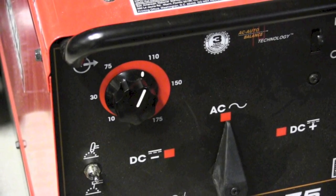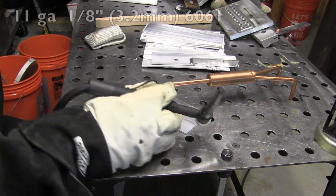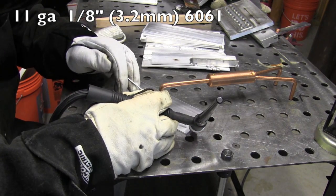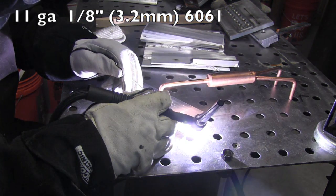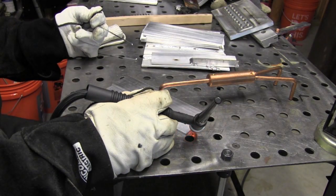But today just using this basic TIG 175 unit welding some aluminum. 11 gauge, roughly eighth inch thick 6061. Getting a tack on the end and for the other end...